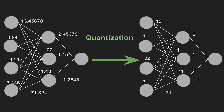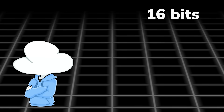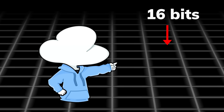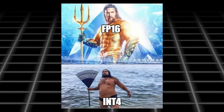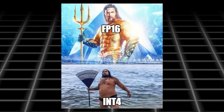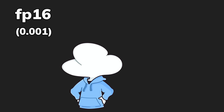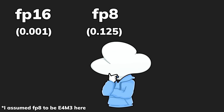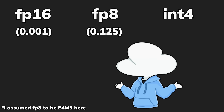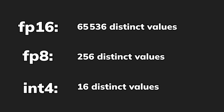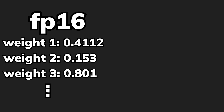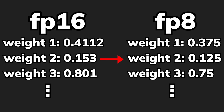So one solution is to quantize the models. Instead of using 16 bits to store a weight, we can use half of it or even a quarter. But that means losing a lot of precision. With FP16, the smallest increment between numbers is around 0.001; in FP8, it's around 0.125; and in INT4, it's basically 1 because everything is an integer. The weights would have to be rounded up or down, impacting the prediction accuracy of the function.